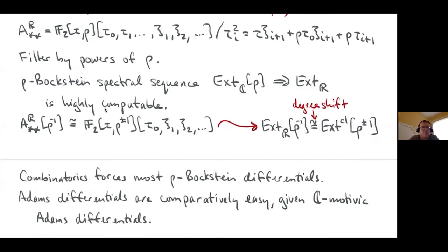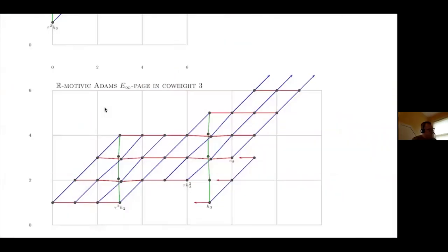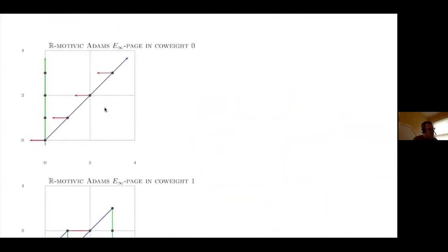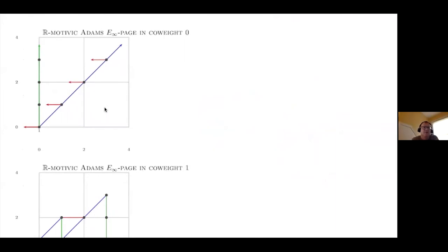We've done a fair amount of R-motivic computations but could go much further — nothing prevents it except finding the time. The computations are much more complicated and therefore more interesting than the C-motivic case. It's really a great computation and it's ready and waiting for someone to dive in; it's not a light side project but a heavy-duty thing.